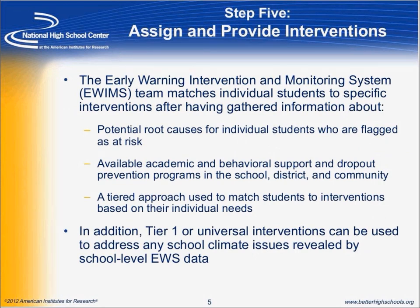At Step 5, you've already looked at your data generated through the Early Warning System tool. Now that you've learned who and what students are being flagged, you're able to take a few steps broader and say, looking at what students are flagged, how are we going to assign and provide appropriate interventions? This also allows us to look at root causes for students flagged as at risk, and to make sure there's a good match between the interventions or instructional supports we're providing based on how students are flagged.